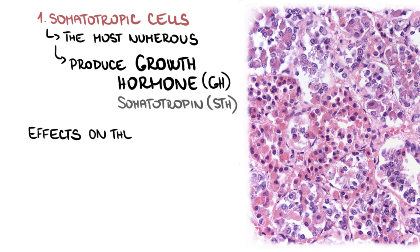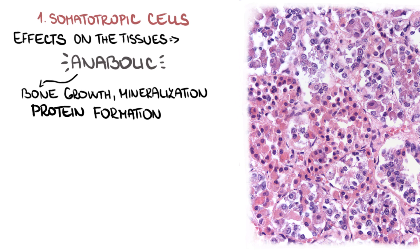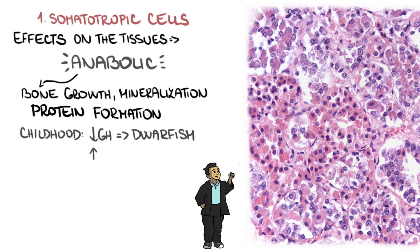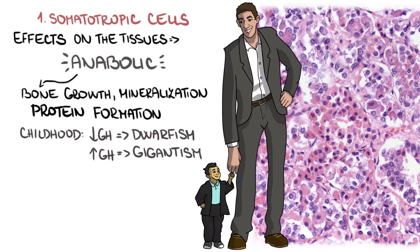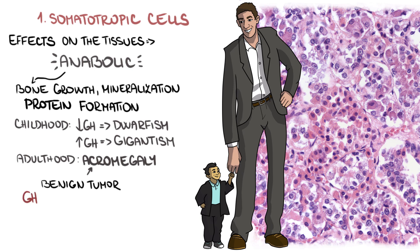Effects of growth hormone on the tissues of the body can be generally described as anabolic. It's involved in processes such as bone growth, bone mineralization, and protein formation. In childhood, a lack of growth hormone results in dwarfism, while a surplus results in gigantism. Occasionally, GH overproduction may occur in adulthood, causing acromegaly, which is overgrowth of hands, feet, nose, and other acral parts of the body. This is usually caused by a benign tumor of the hypophysis called a GH-secreting adenoma.